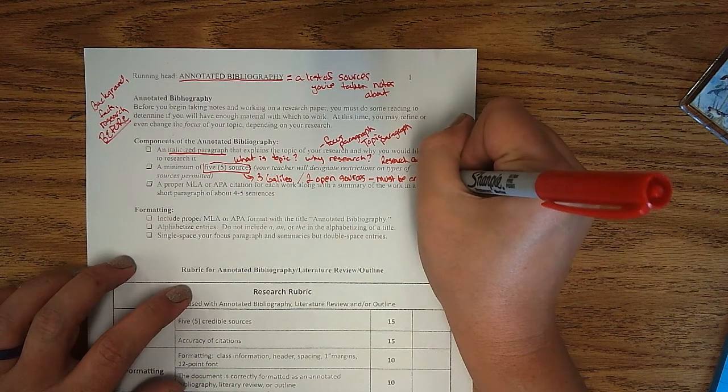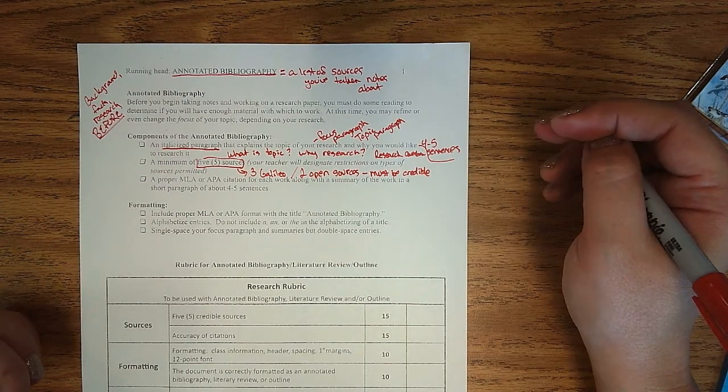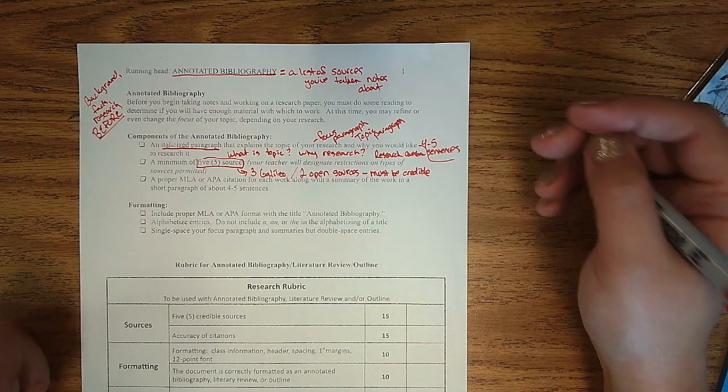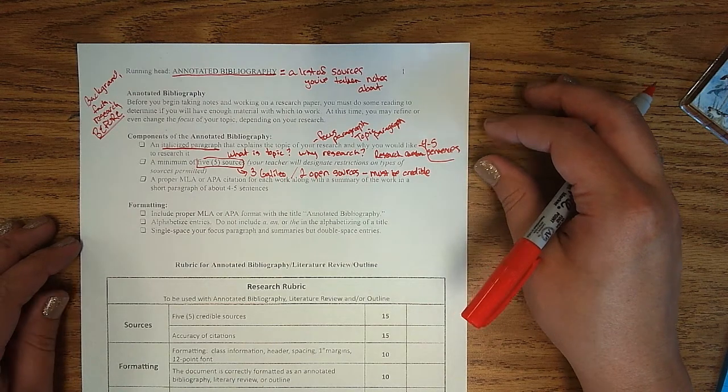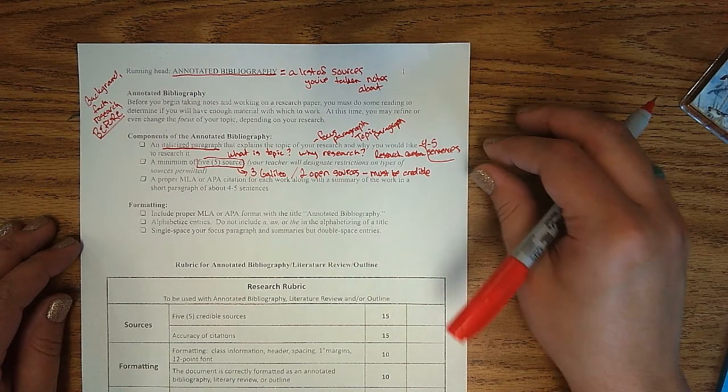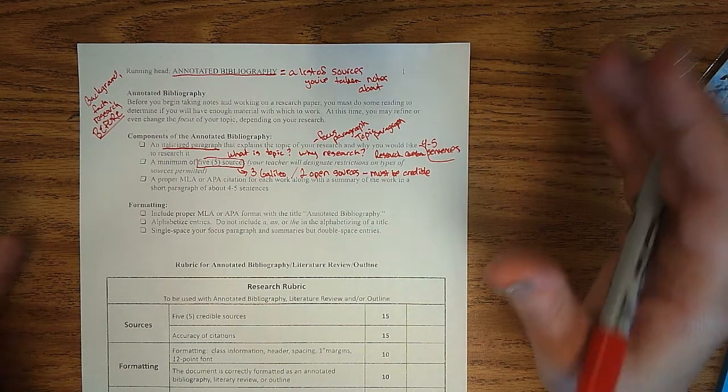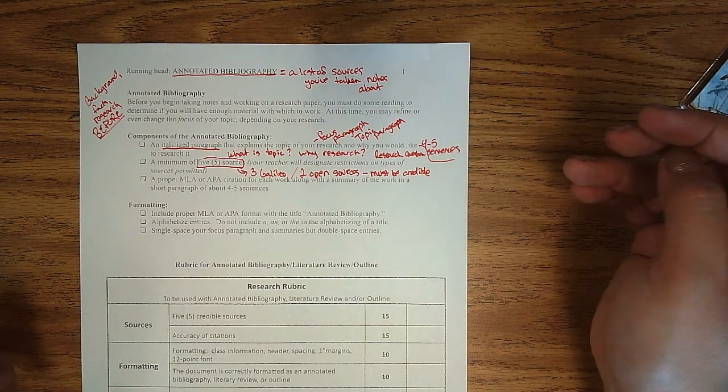That means they need to be backed with a credible author. They need to have research of their own. They need to be legitimate sources that contain good evidence and good research for what you're going to talk about. So if you build your paper on a faulty foundation by using not good research, then your whole paper is going to be flawed.